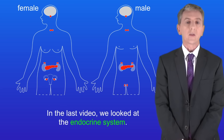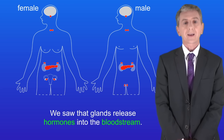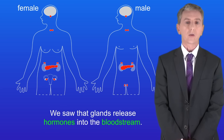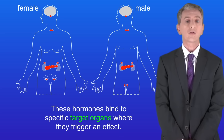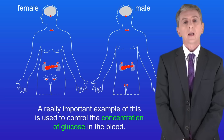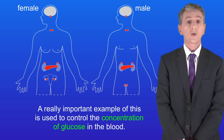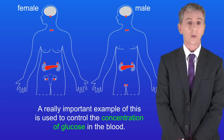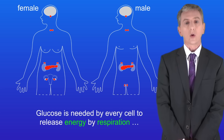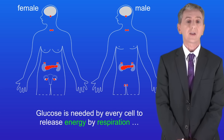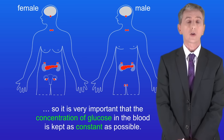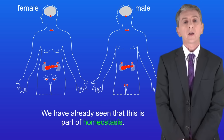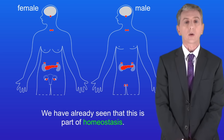In the last video we looked at the endocrine system. We saw that glands release hormones into the bloodstream, and these hormones bind to specific target organs where they trigger an effect. A really important example of this is used to control the concentration of glucose in the blood. Glucose is needed by every cell to release energy by respiration, so it's very important that the concentration of glucose in the blood is kept as constant as possible — and we've already seen that this is part of homeostasis.